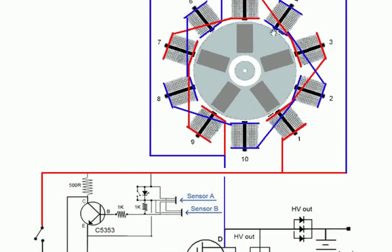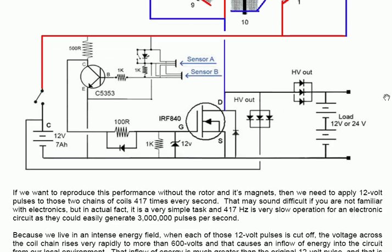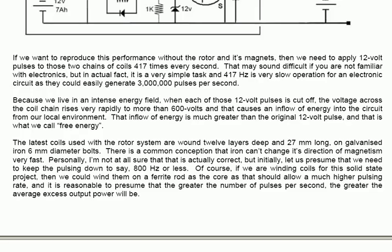The circuit uses two separate Hall effect sensors. This is a circuit here and there are two sets of coils wired in groups of five. There are two sensors positioned around the rotor. That works very well indeed but if we want to reproduce this performance without the rotor and its magnets then we need to apply 12 volt pulses to those two chains of coils 417 times every second. That may sound difficult if you are not familiar with electronics but in actual fact it's a very simple task and 417 hertz is very slow operation for an electronic circuit as they could easily generate 3 million pulses per second.